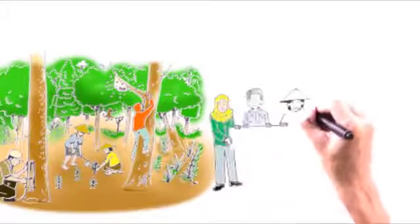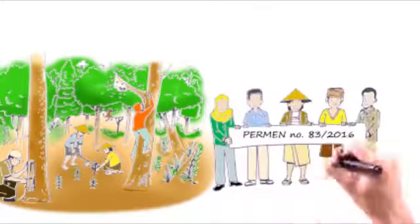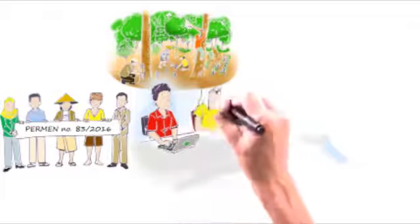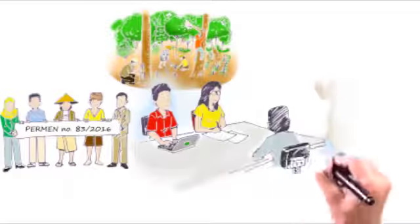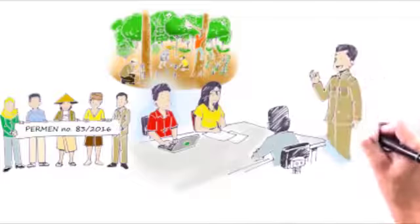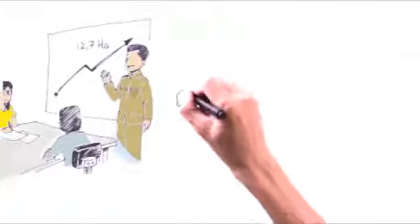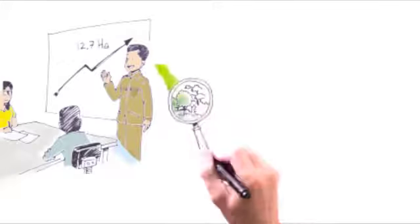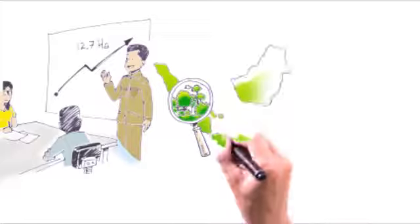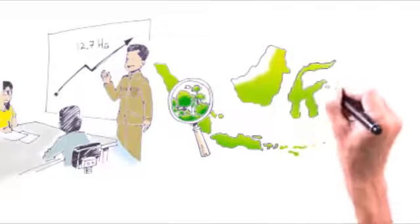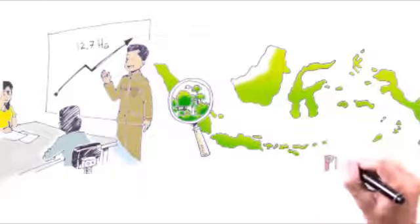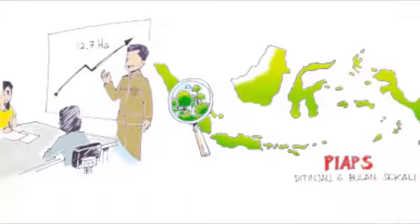Through the regulation of the Minister of Environment and Forestry No. 83 of 2016 concerning social forestry, the government expands the space for public management in forest by up to 12.7 million hectares, or 10% of the total area of forest in Indonesia. This target is mapped in Peta Indikatif Areal Perhutanan Sosial, or the Indicative Map for the Social Forestry Area, abbreviated as PEAPS, which can be revised based on feedback from society and other parties every six months.